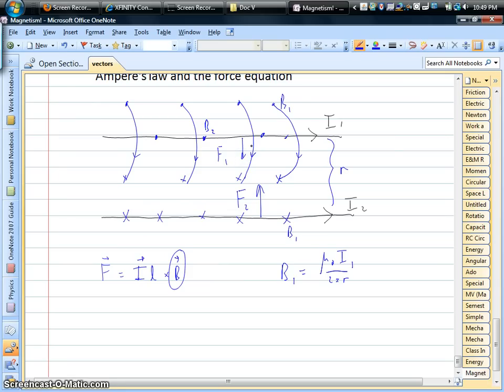So literally, if the two currents are in the same direction, the two wires will be attracting each other. And if you had the currents going in opposite directions, maybe current 1 to the right, current 2 going to the left, these things would actually repel each other. They literally would push each other away. You can do the same combination of right-hand rules to prove that to yourself if you want.